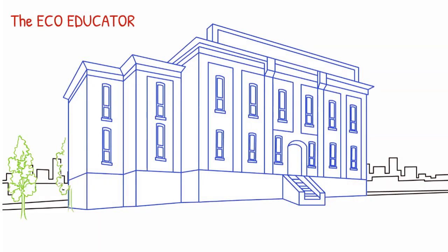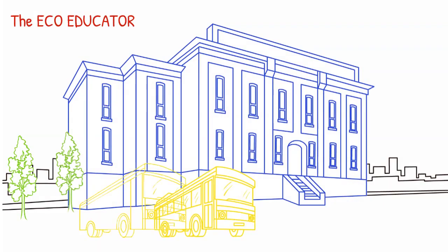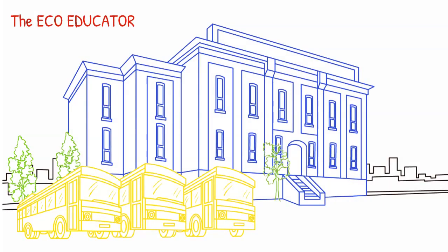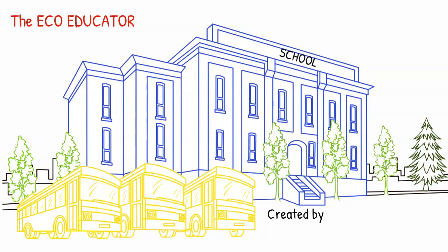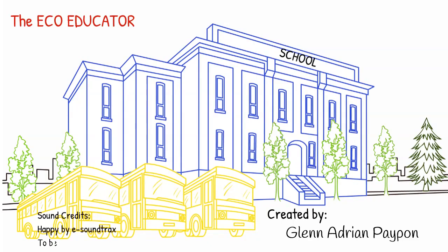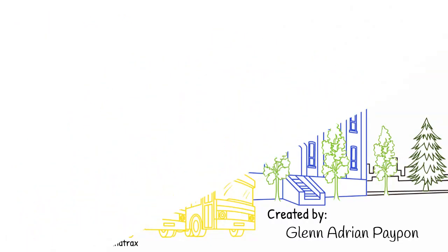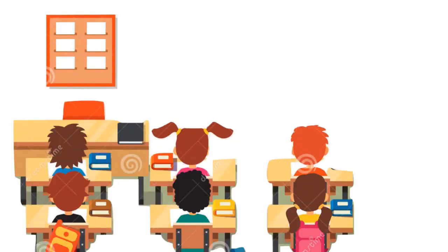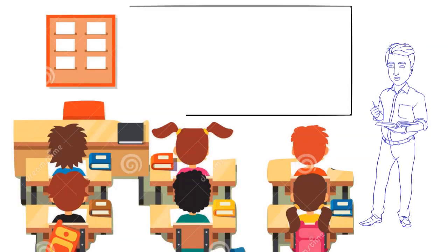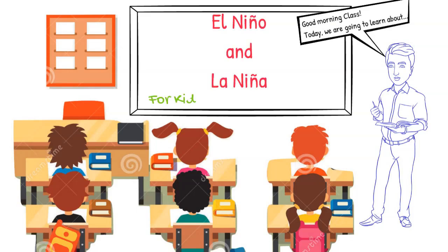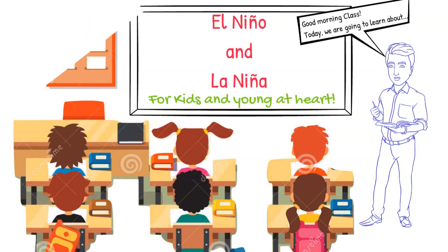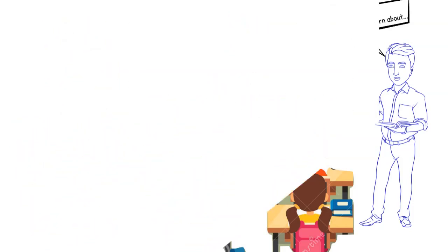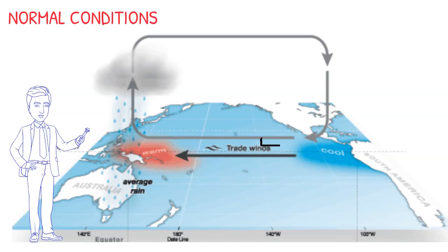Hello everybody, this is Glenn and you are in my YouTube channel, The Echo Educator — your gateway to environmental issues across the globe. In today's virtual classroom, we are going to learn about El Niño and La Niña. But first, let's recall what happens in the Pacific Ocean under normal conditions.